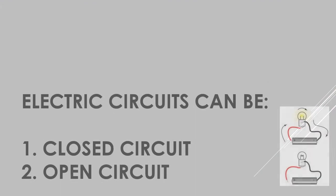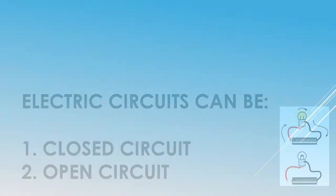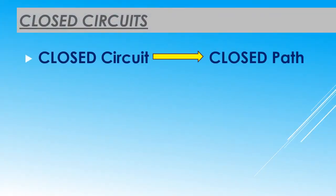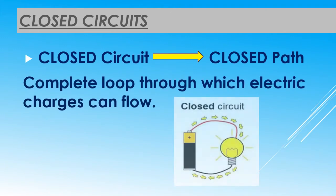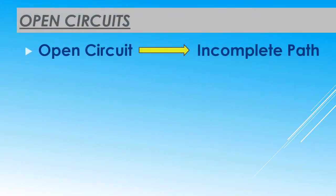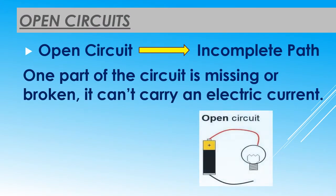Electric circuits can be either a closed circuit or an open circuit. In a closed circuit, please look at the figure below — the electric current is able to flow because all the parts are connected in a complete loop, so it's a closed path and the bulb is lit. In an open circuit, the wire is not connected to the bulb and thus the electric current cannot move, so it is an incomplete path.